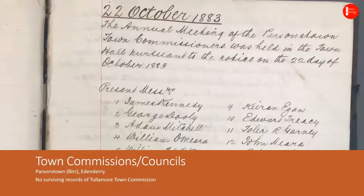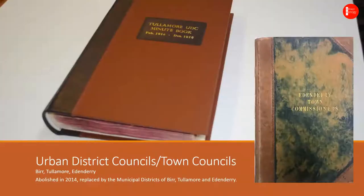Alongside the administration of the county at large, during the 19th century towns such as Birr, Edenderry and Tullamore had town commissions with elected commissioners responsible for street lighting, water supply and sanitation. There are limited records for Parsonstown Town Commission and Edenderry Town Commission, much of the latter's records having been destroyed in a fire in Edenderry Town Hall in 1945, and no records at all survived for Tullamore Town Commission. In 1898, the town commissions were made urban district councils; in 2001 renamed as town councils; and in 2014 the Local Government Act abolished town councils and created the municipal districts of Birr, Edenderry and Tullamore as we know them today.